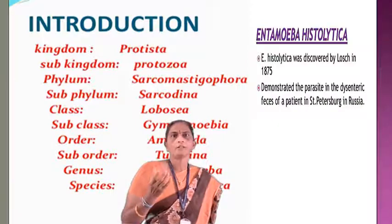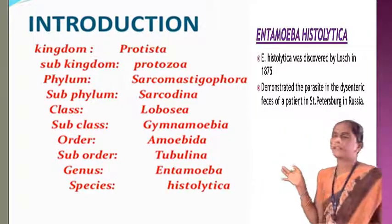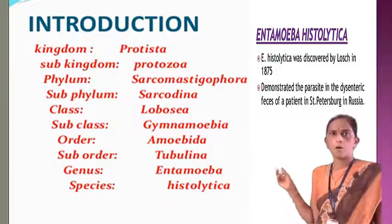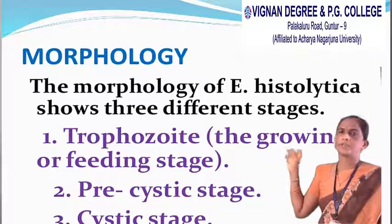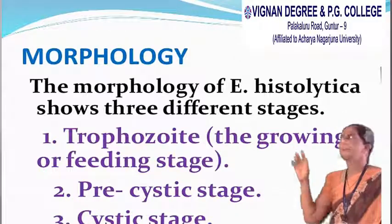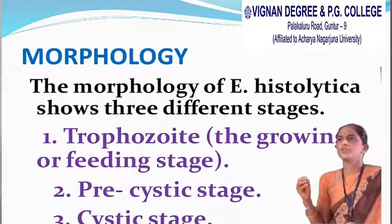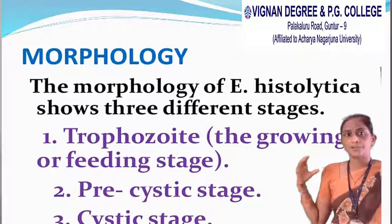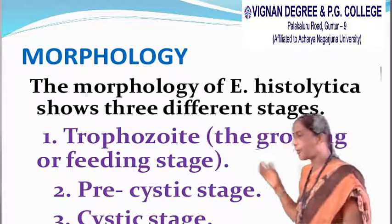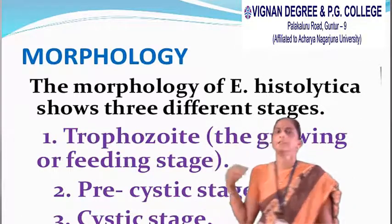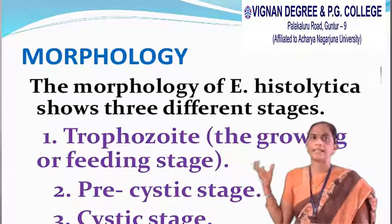Now discussing the structure of Entamoeba histolytica. It is a shapeless organism. Coming to geographical distribution, it is distributed all over the world — not only in tropical and subtropical regions. Subtropical means low temperature and high humidity.